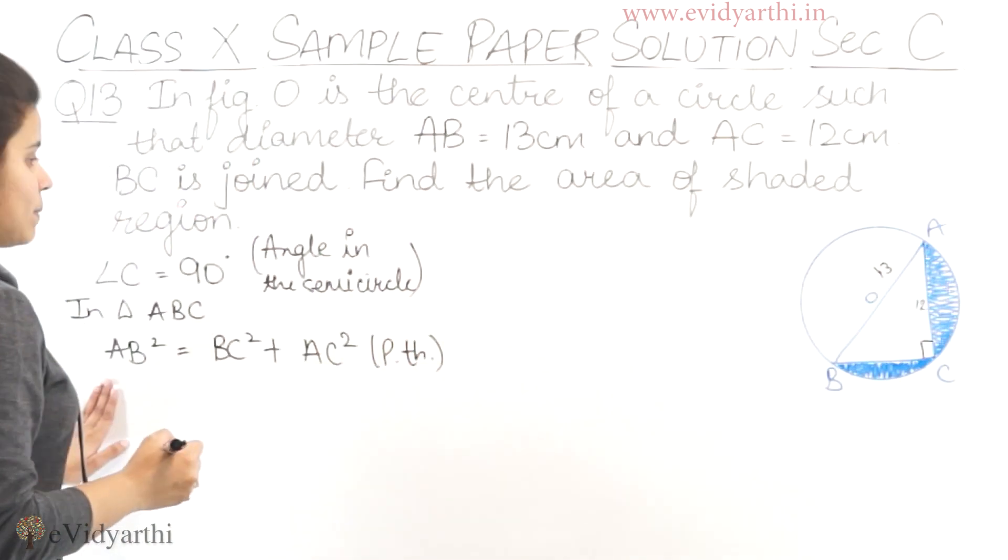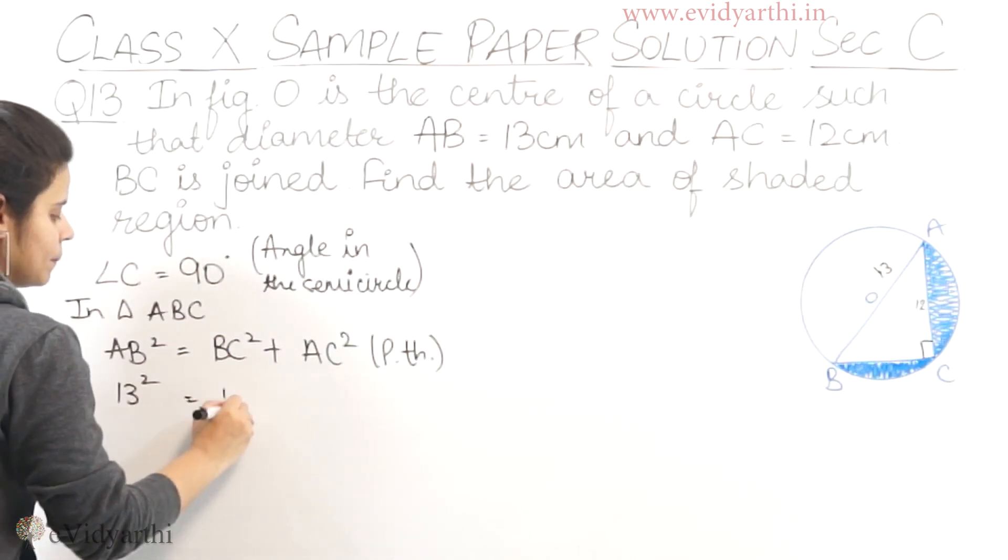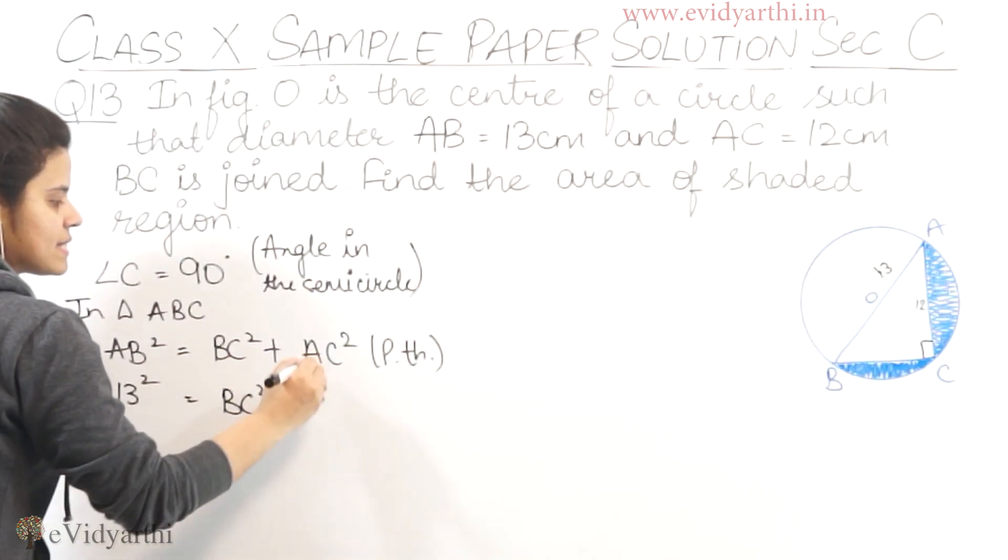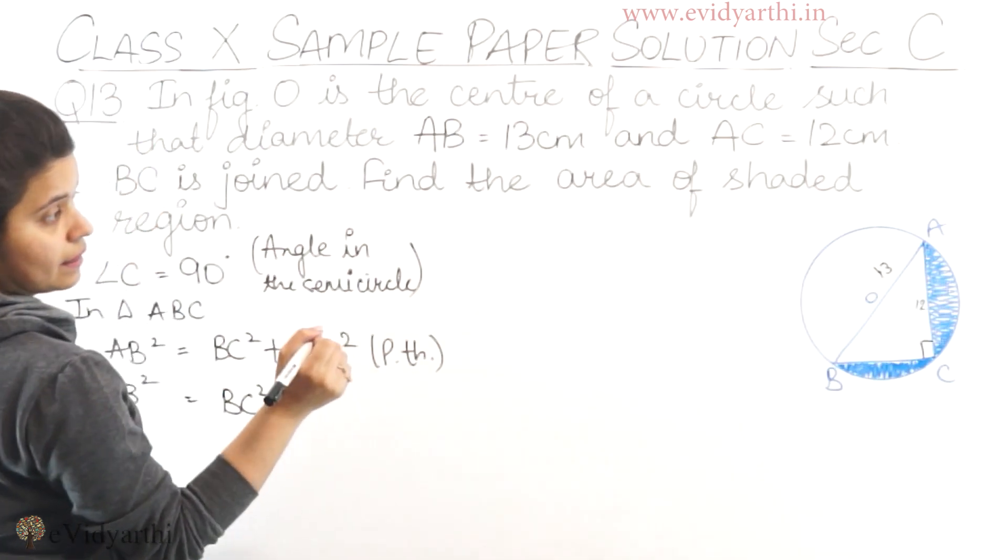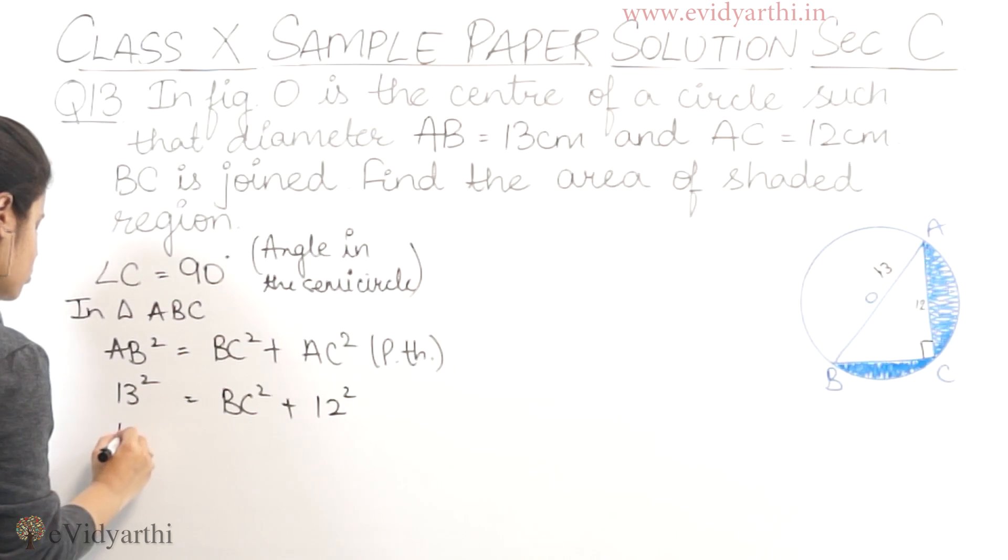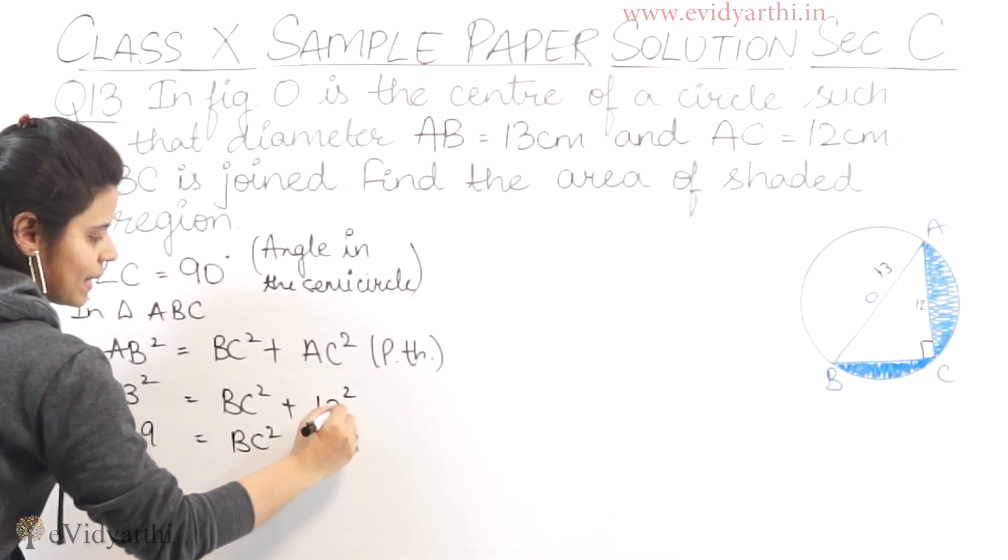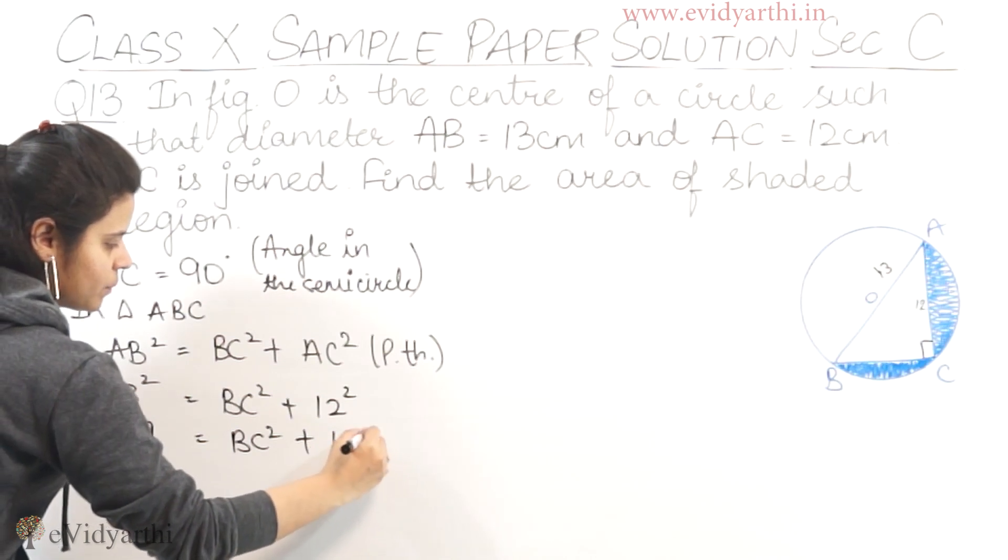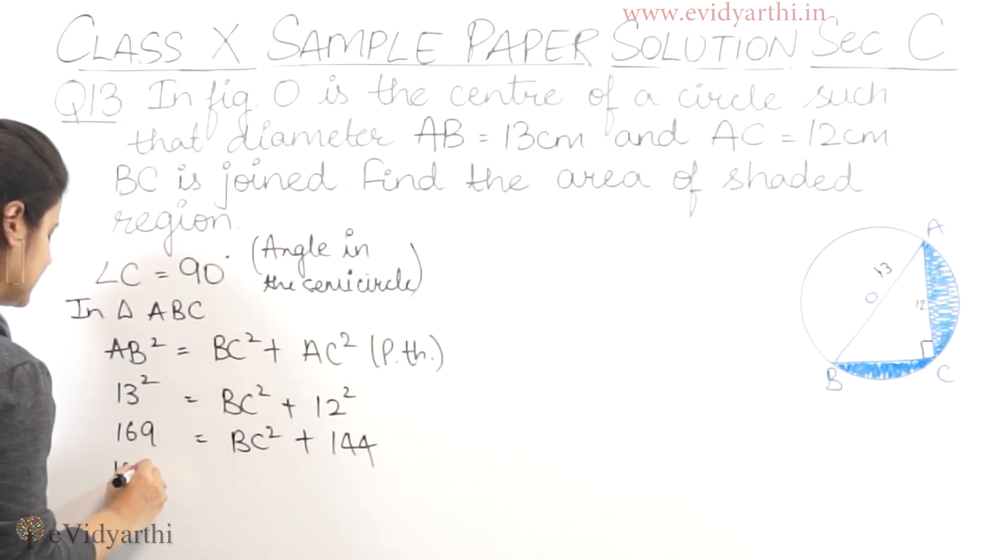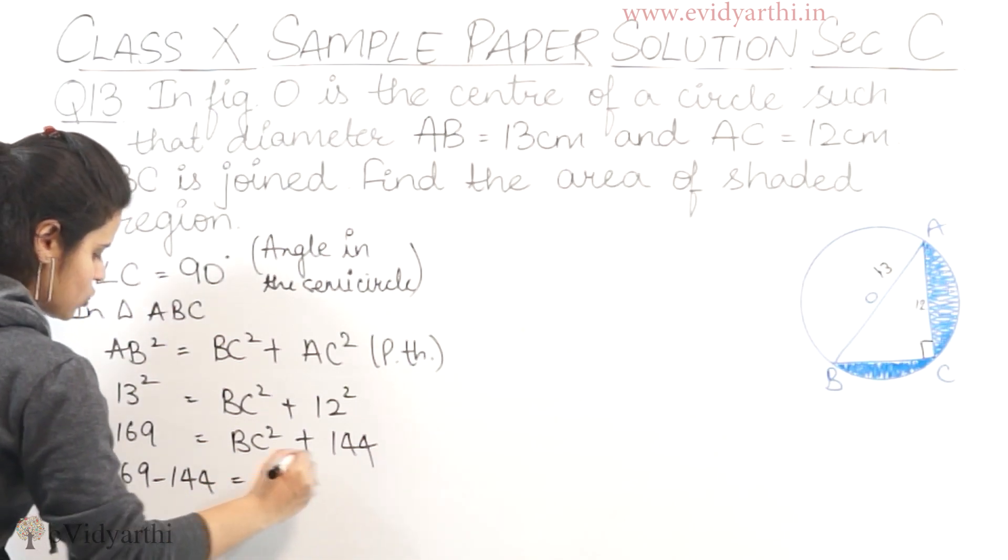AB is given as 13, so we have 13². BC we need to find. AC is 12, so we have 12². So 13² is 169 and 12² is 144.